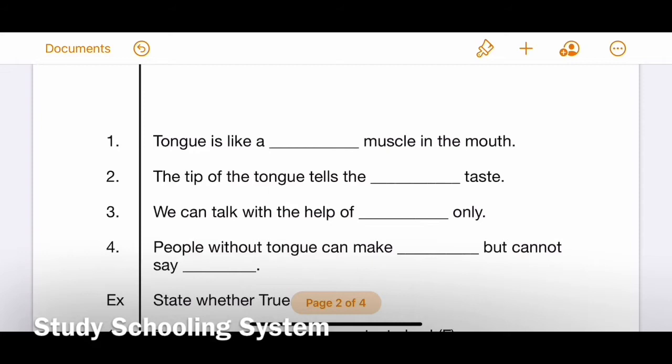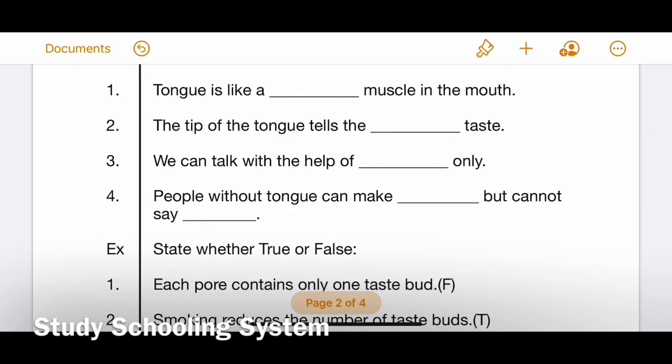You have to look at the diagram to see which taste bud is at the tip of the tongue. Number three: We can talk with the help of dash only, very easy. Number four has two blanks, so be careful: People without tongue can make dash but cannot say dash. Very easy. You'll do fill in the blanks with the help of the hint box yourself.